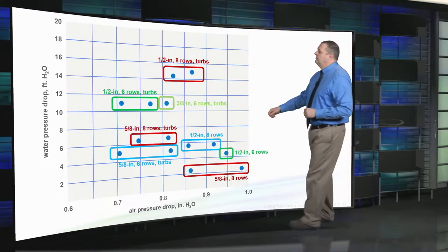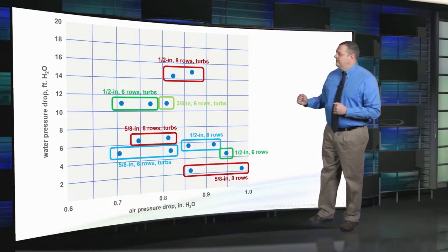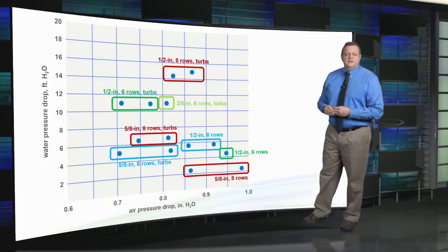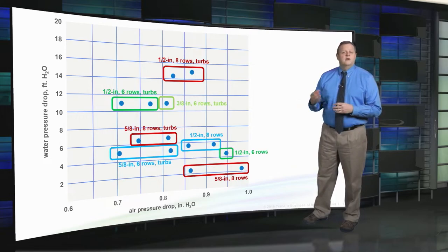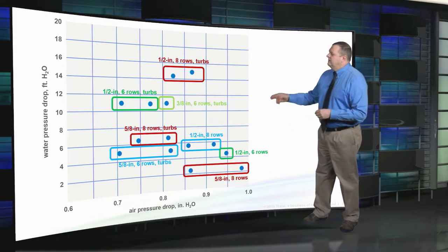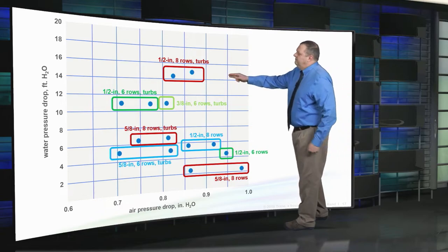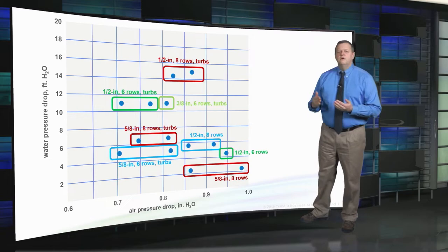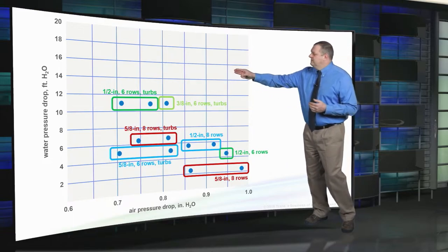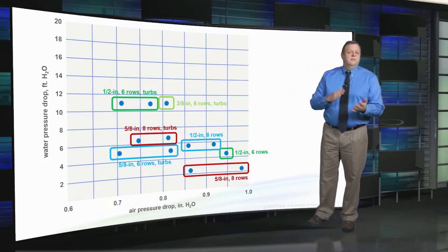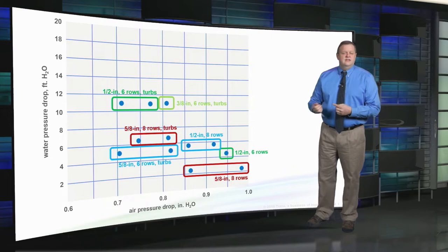Considering relative cost: the 3/8 inch tube coil is cheapest, depicted in light green. The next cheapest are the 6-row 1/2 inch coils. The blue options are a little more expensive — 8 rows with 1/2 inch tubes, or 6 rows with 5/8 inch tubes. And the red coils are the most expensive — all 8-row coils. For this application, why spend more on 8 rows with 1/2 inch tubes if you can get lower air and water pressure drop at a lower price with 6 rows? Similarly, with 5/8 inch tubes, 6 rows provides lower air pressure drop at lower cost.